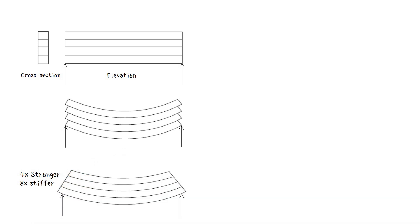The glue is necessary to transmit horizontal shear stresses from one laminate to the next. However, if the shear stresses are greater than the glue's strength, the glue will fail. So how can we evaluate these shear stresses, and hence establish the required strength for the glue?